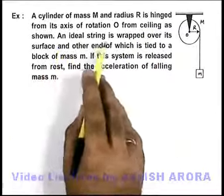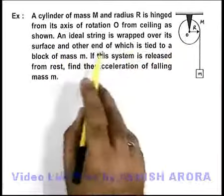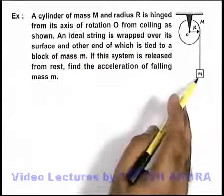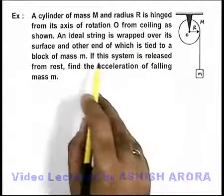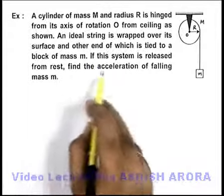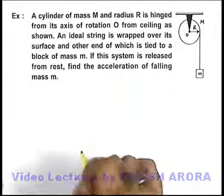An ideal string is wrapped over its surface, and the other end is tied to a block of mass m. If this system is released from rest, we are required to find the acceleration of the falling mass.